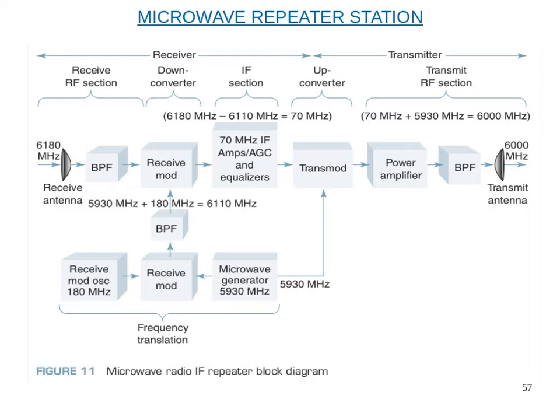The transmode up converts the IF to RF for retransmission. The bandpass filter selects the required band of frequencies. The received signal passes through the bandpass filter to the receive mode section, which is the down converter section, converting the RF to intermediate frequency. The IF signal then goes to the IF amplifier and the automatic gain control equalizer.